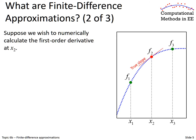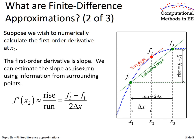Now, suppose we have this discrete function but we want to know the slope at some point along this function. Let's say we want to know the slope at point F2. How do we do that if we only know the function at discrete points? We will recognize that the derivative is slope. We can estimate the slope at position F2 by looking at points 1 and 2 and connecting those points with a line.